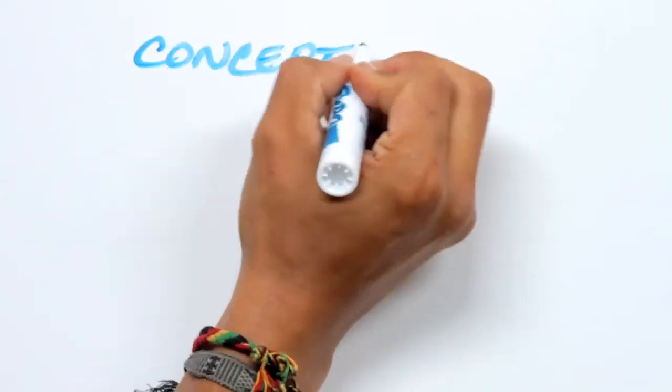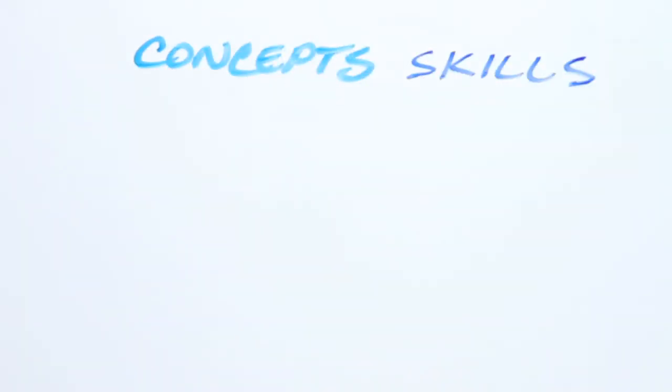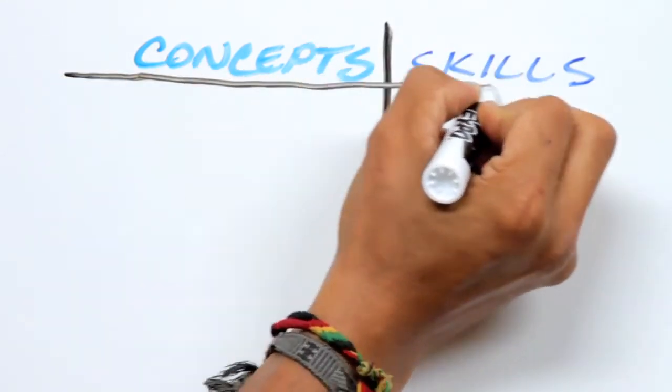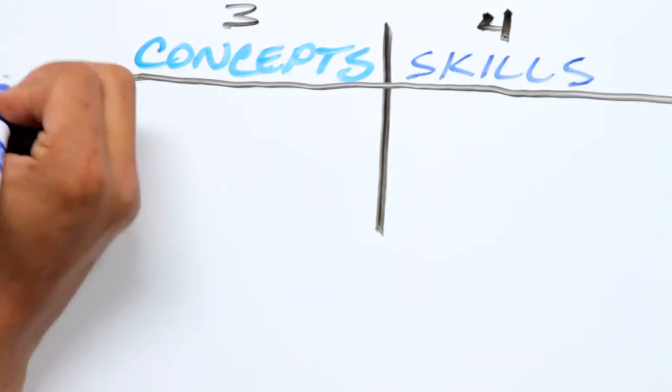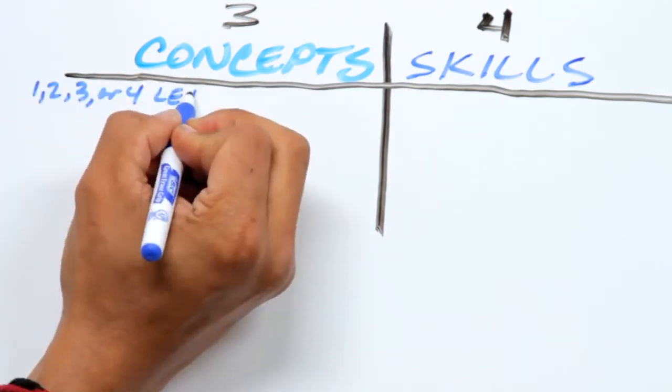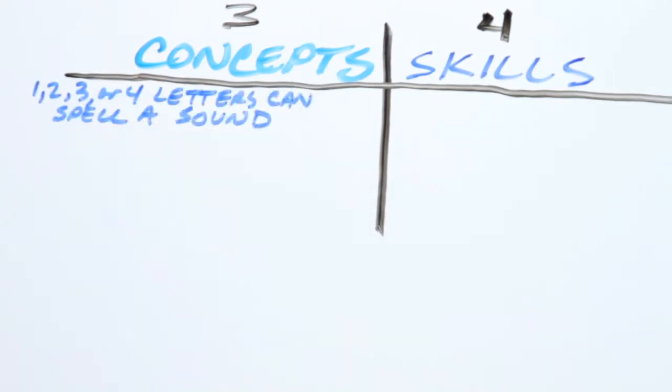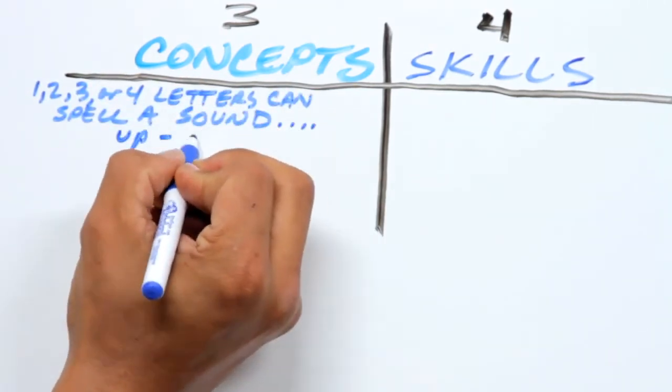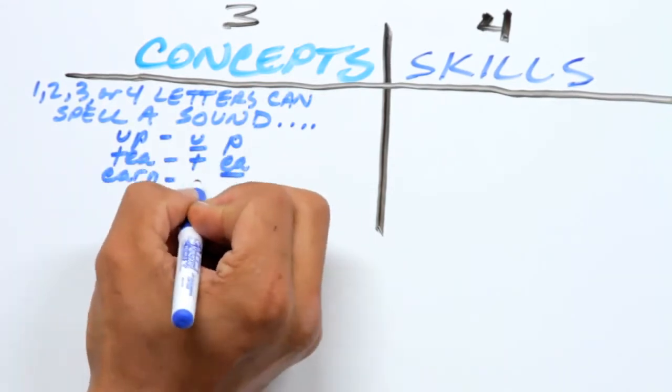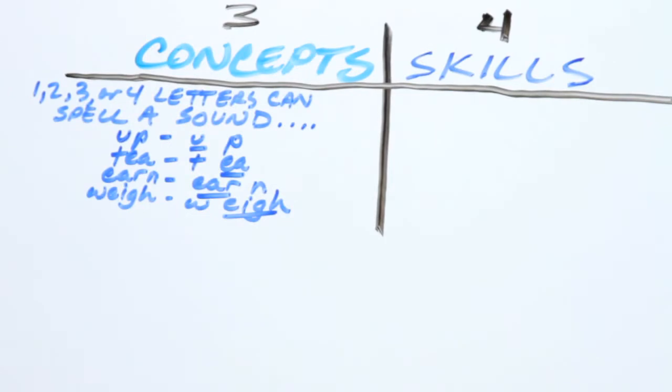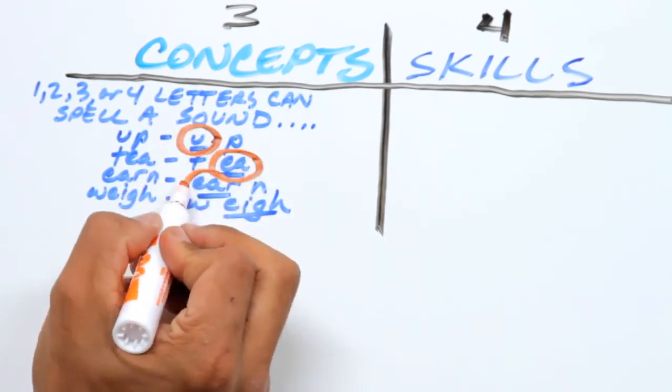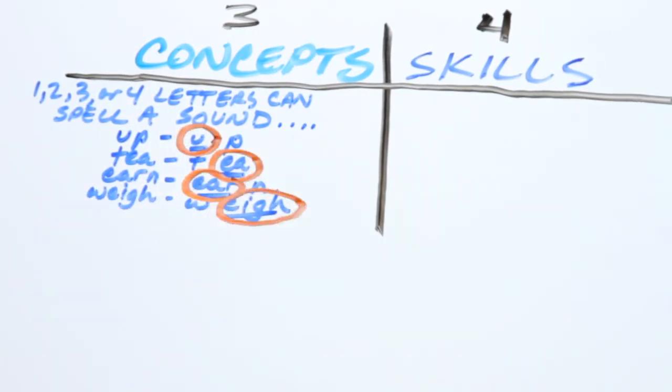Eblee is based on three concepts and four skills that provide the foundation for learners to accurately read and spell any word in the English language. The first Eblee concept is, in the English language, one, two, three, or four letters can spell a sound. Uh in up, e in tea, er in earn, and ay in way. As you can see, one, two, three, or four letters can spell a sound.